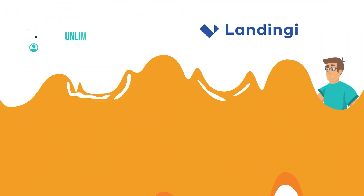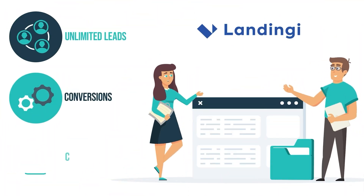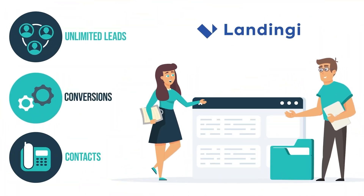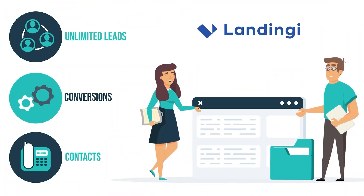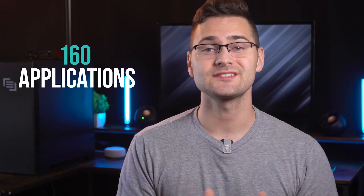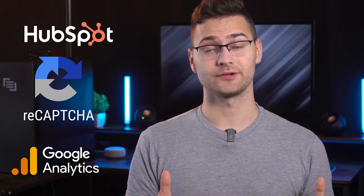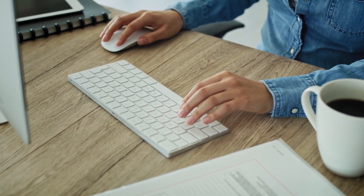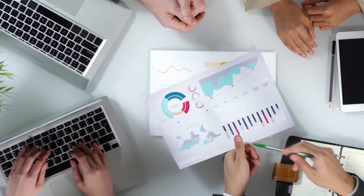Landingi also offers unlimited leads, conversions, and contacts, so you can scale up limitlessly. For integration, you have over 160 applications like HubSpot, reCAPTCHA, Google Analytics, and more. It also gives an AI copy assistant to optimize your copy, your SEO, and your images as well. The most special thing about this software that I also like is Event Tracker — this tool captures micro-conversions like scrolls, button clicks, and video views, and gives you real insights into user behavior so you can optimize your pages effectively.